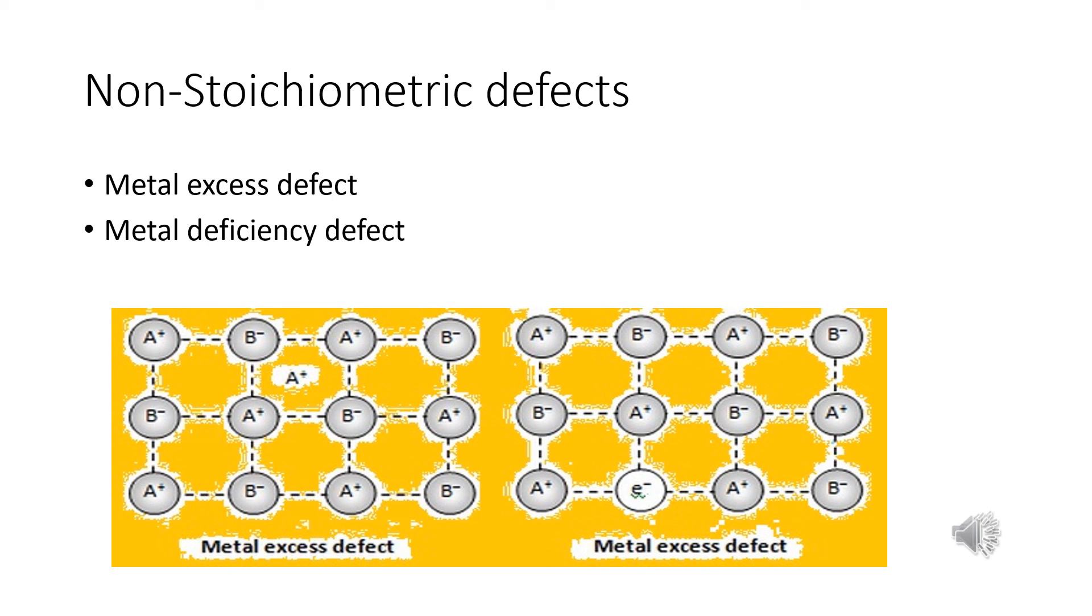This type of defect is generally the compounds of transition metals which can exhibit variable valency. Crystals of FeO, FeS and NiO shows this type of defects. And a typical example of FeO which is mostly found with a composition of Fe0.95O. It may actually range from Fe0.93O to Fe0.96O.